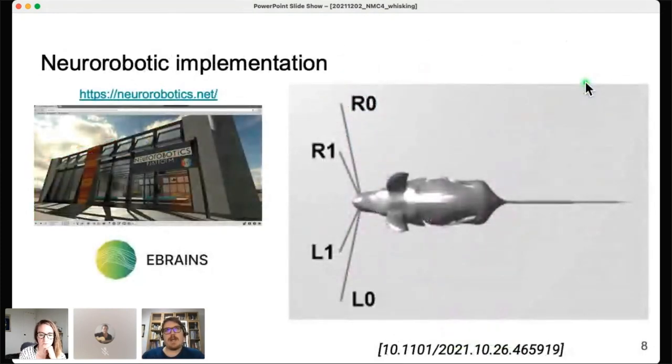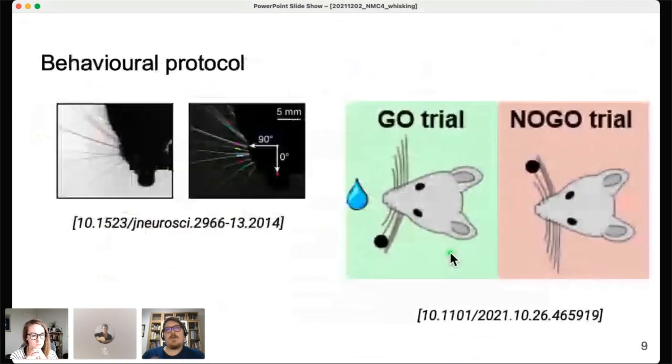That was the brain that we implemented, the model of the brain. We also have the model of the mouse. We worked using the neuro-robotics platform of the Human Brain Project and we modified one of the models that are already there. We added these active whiskers, these four active whiskers, two at the left and two in the right part of the mouse nose, and we tested this integrated system.